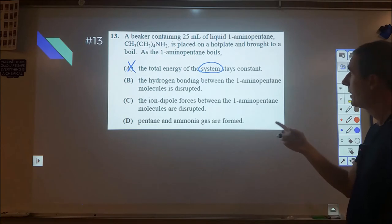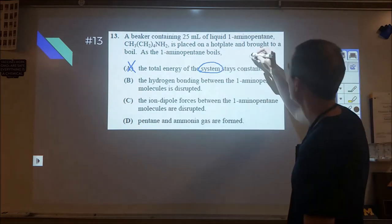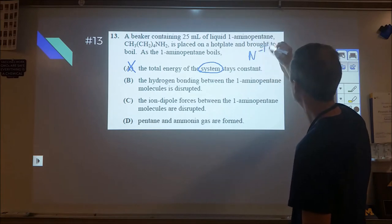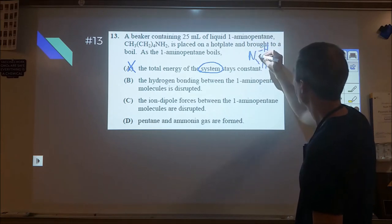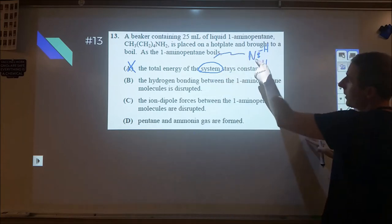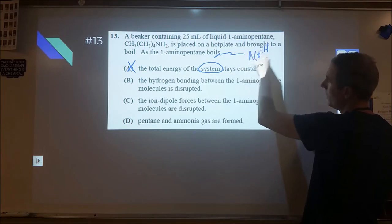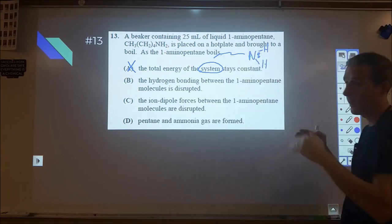The hydrogen bonding between the 1-aminopentane molecules is disrupted. So 1-aminopentane has an amino group on the end and then it's got all the carbons attached over here. So we are going to have hydrogen bonding between molecules because the negative charge in that nitrogen and the positive charge in the hydrogens on separate molecules will attract each other. So this is a potentially good answer.